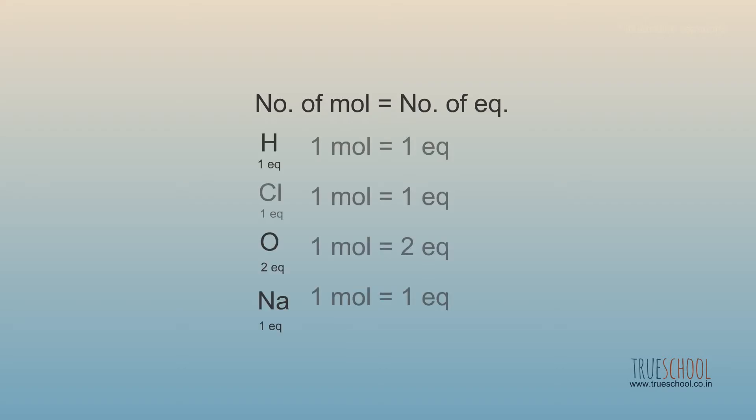Basically, to use this technique of equivalence, we should know one mole is how many equivalents for any atom or compound. Here we say that one mole of chlorine is one equivalent whereas one mole of O is two equivalents. Why is this difference? To understand this, we need to look at how basic reactions take place.